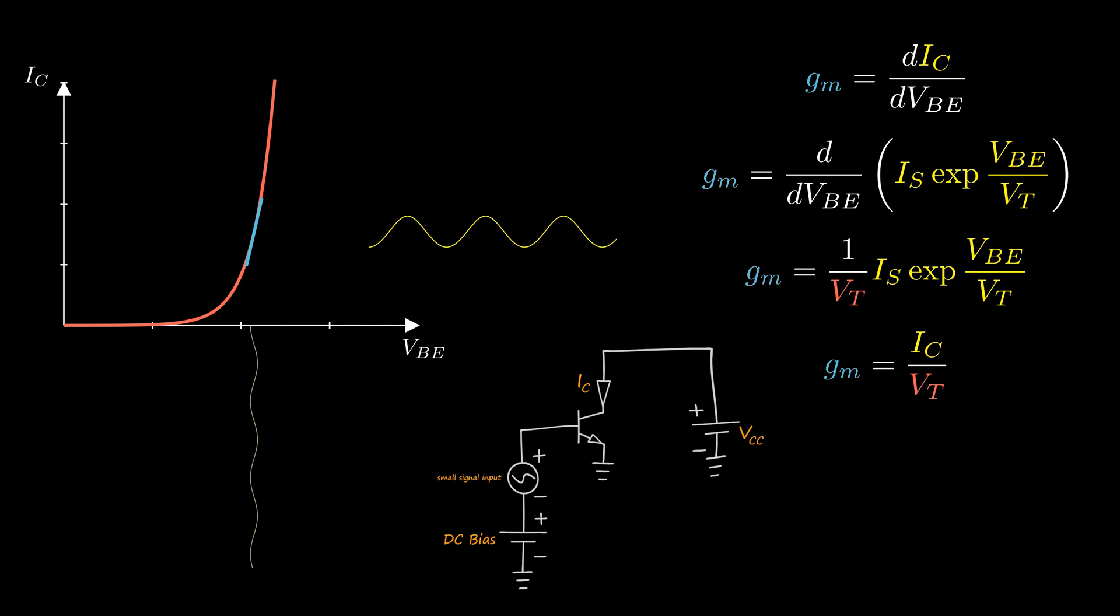So by applying a small voltage signal to the input, we can overcome the nonlinearity of the device by dealing with only a small portion of the curve. And the output current is just the slope at the bias point times the input voltage rather than being nonlinearly exponentially related to the input.